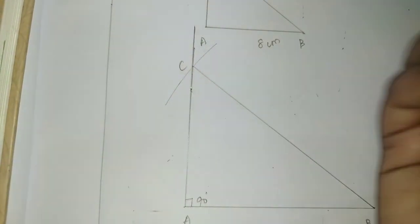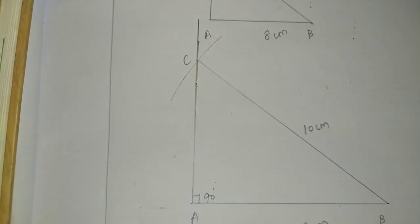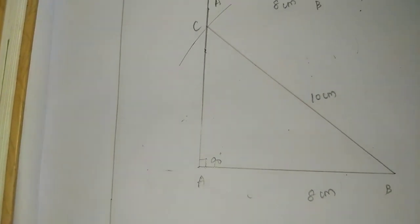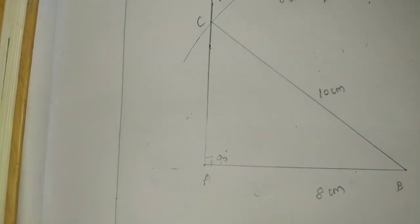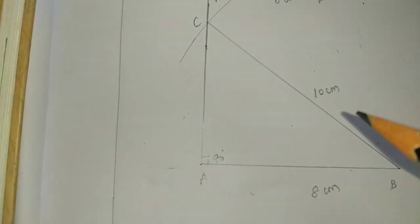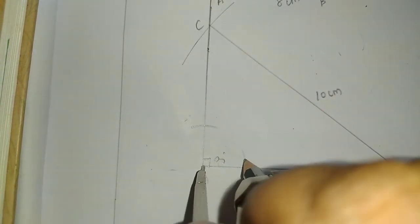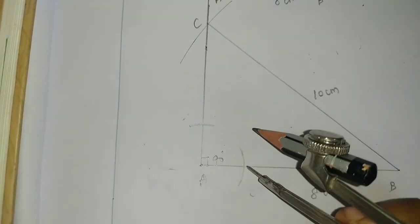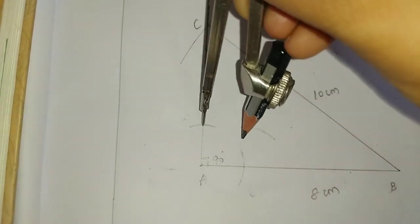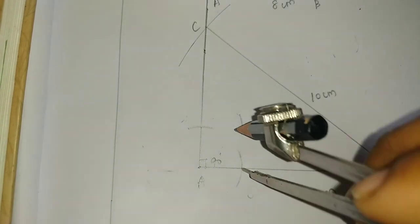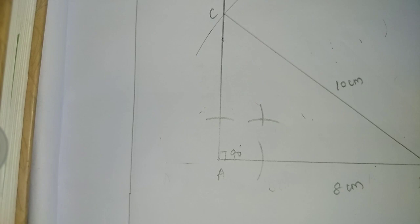Rough diagram: A, B, C 10cm, 8cm. As usual, locate incenter, incircle. So without measurement, arc present. A measure, two arcs cut.